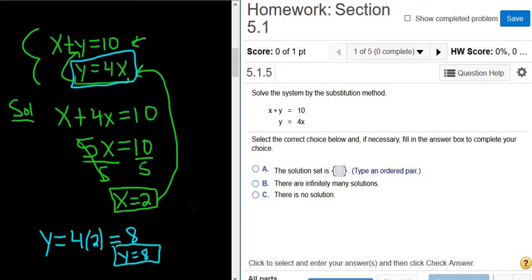So the homework wants this written as an ordered pair. Ordered pairs are always written x, y. So it would be parentheses 2, comma, 8, parentheses. And this is the point in the x, y plane where these two lines actually intersect. That's the meaning of the solution.